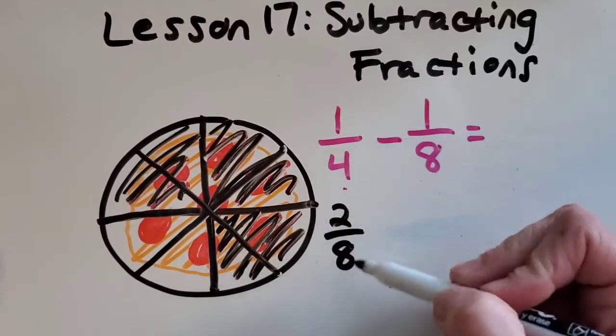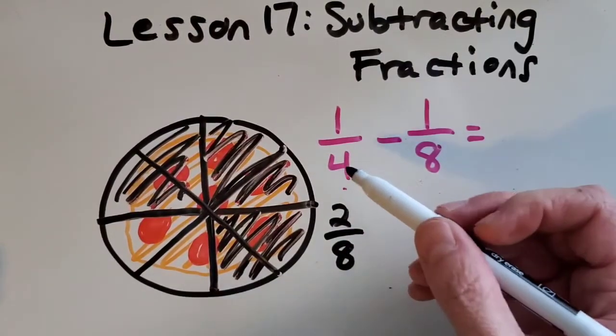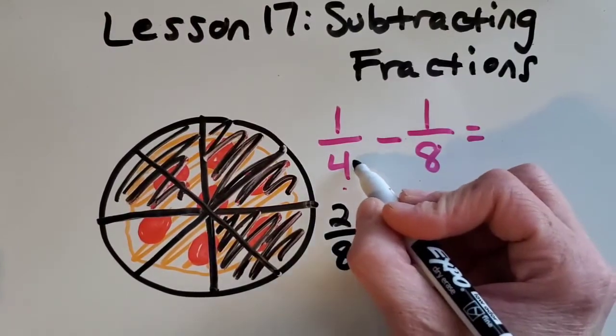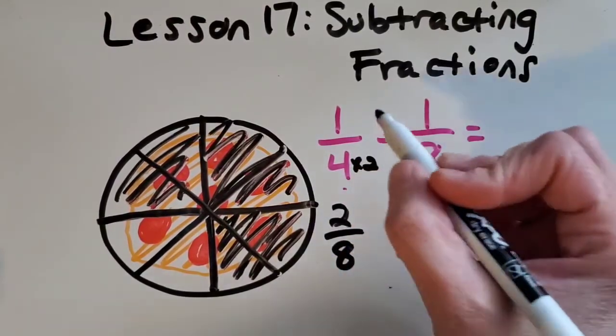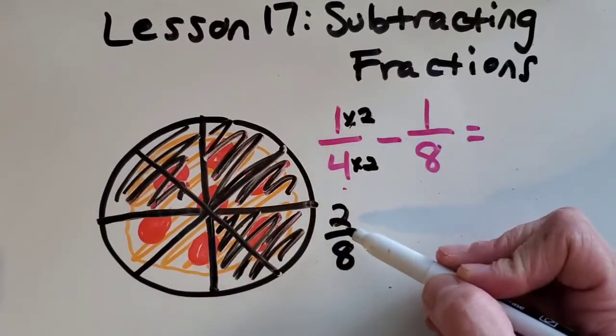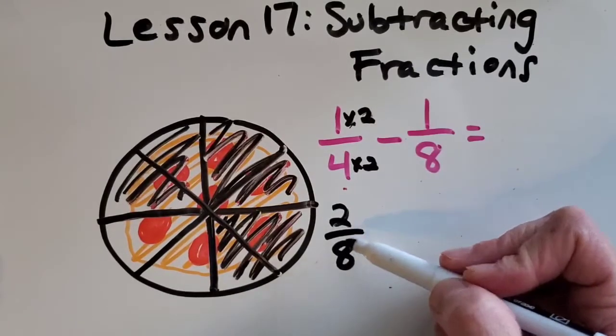Okay good it's 2 eighths. That must be the equivalent fraction. We can look for a pattern too just to be safe. How do you get from 4 to 8? Well times 2, and if I did that to the top, the numerator, it matches up. 1 times 2 is 2 so that works perfectly.